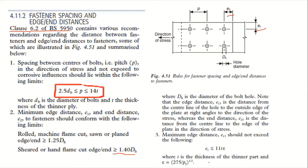Another consideration: e1 should be less than or equal to 11 times the thickness. There is also a variable given by a specific formula. If your steel strength is equal to 275, this variable automatically becomes e2 equals e1.